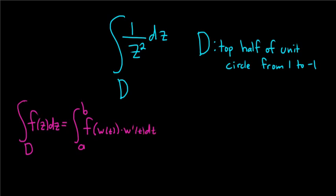And w of t here is parametrization of your contour. So this parametrizes D over the interval a, b. So a is your lower limit of integration and b is your upper limit of integration.